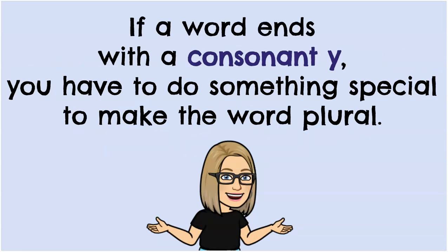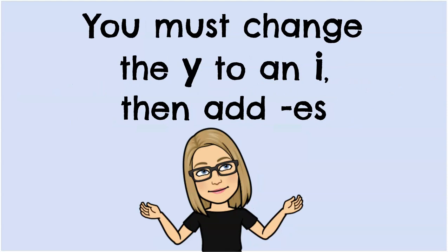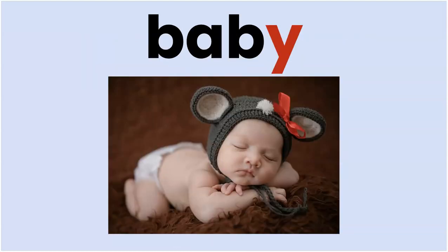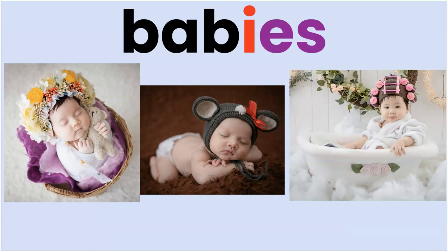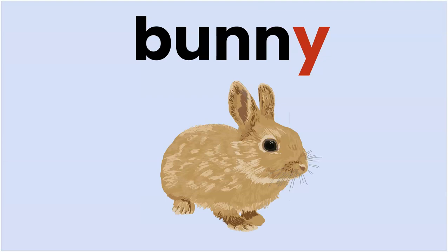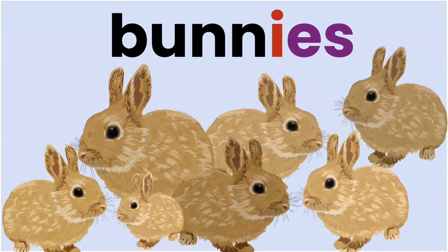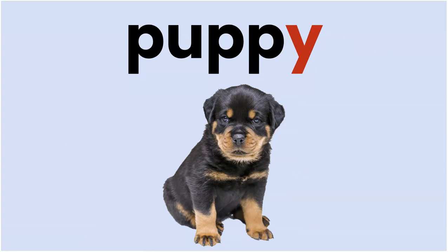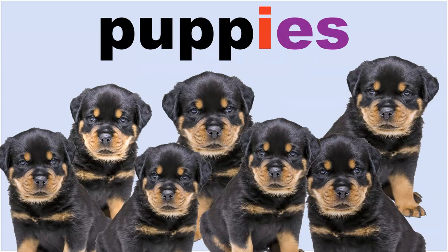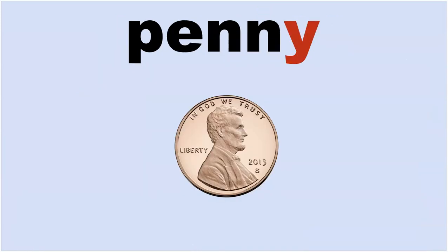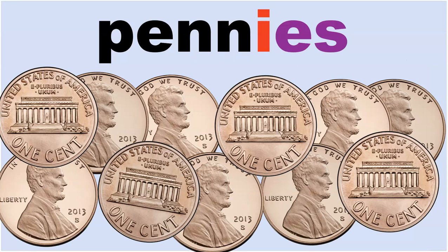If a word ends with a consonant Y, you have to do something special to make the word plural. You must change the Y to an I, then add ES. So baby becomes babies. Bunny changes the Y to an I to become bunnies. Puppy becomes puppies. And penny becomes pennies. So we changed the Y to an I, and then we added ES.